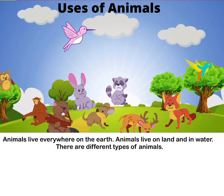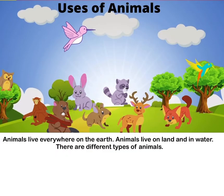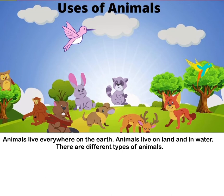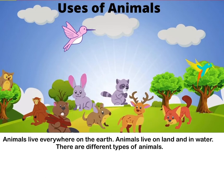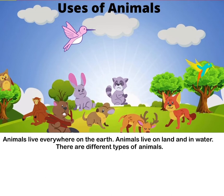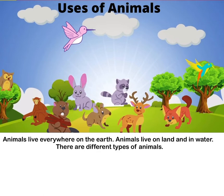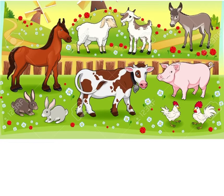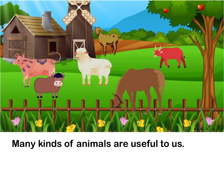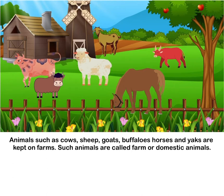Lesson 3: Uses of Animals. Animals live everywhere on the earth — on land and in water. There are different types of animals. Now we will learn about animals and their uses. Many kinds of animals are useful to us. Animals such as cows, sheep, goats, buffaloes, horses, and yaks are kept on farms. Such animals are called farm animals or domestic animals.